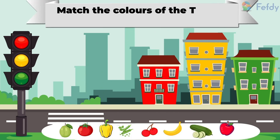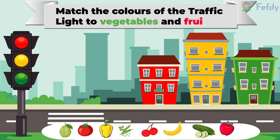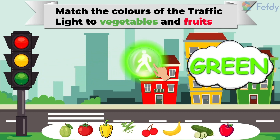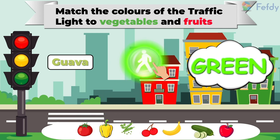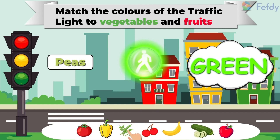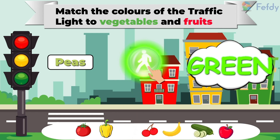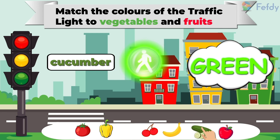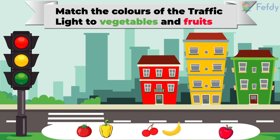Match the colors of the traffic light to vegetables and fruit. Let's try matching the color green to the green vegetables and fruit. Green guava. Peas — is peas green in color? Yes, green peas. What else is green? Green cucumber. That's right. We've segregated all the greens. Now let's move on to our next color.